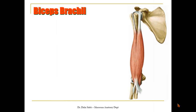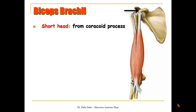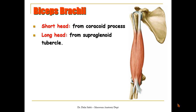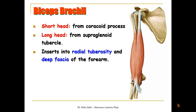The biceps brachii has two heads: a short head which arises from the coracoid process of the scapula, and a long head which arises from the supraglenoid tubercle of the scapula. Both heads unite in one belly and it is inserted by a tendon into the radial tuberosity and by an aponeurosis into the deep fascia of the forearm.